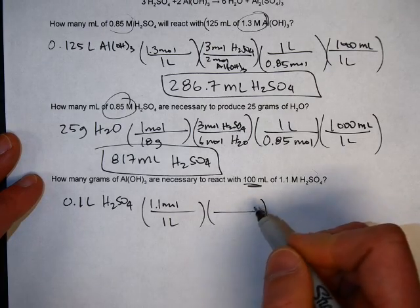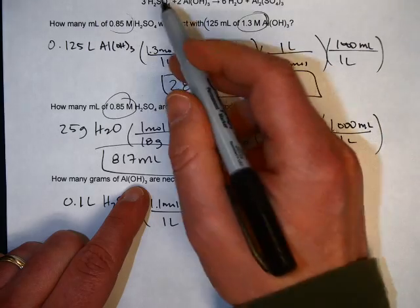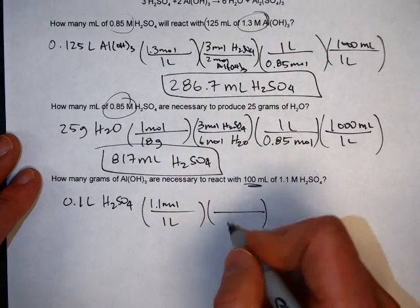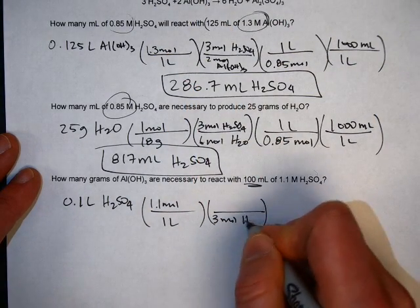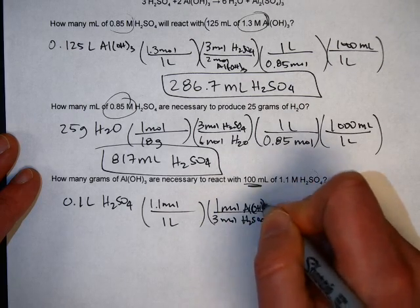The mole ratio, we're going from H2SO4 to Al(OH)3. So it's a 3 to 2 ratio. 3 moles H2SO4 to 1 mole of Al(OH)3.